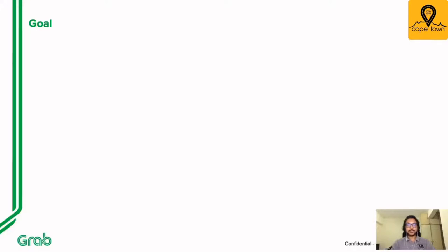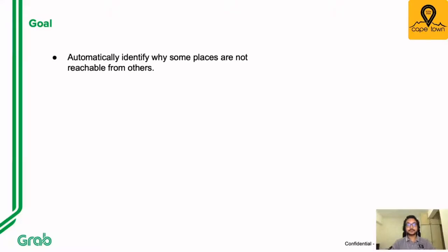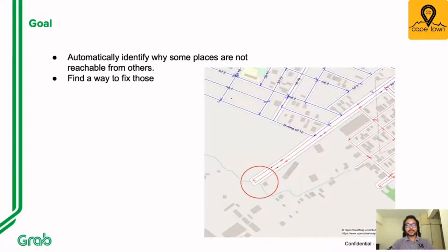Looking at the problems and probable root causes, we have come up with a couple of goals. First, we want to automatically identify why some places are not reachable from others. Then we need to find a way for our operations team to take a look and fix those problems. Here is a visual of the end goal — we want to bring the red circular area to our attention and fix it. If it doesn't make sense at this moment, don't worry — this picture will come back at a later point.